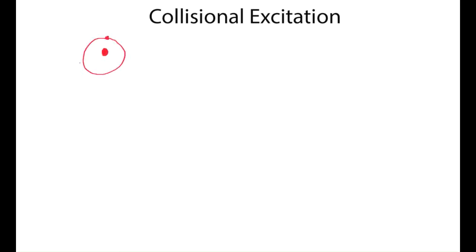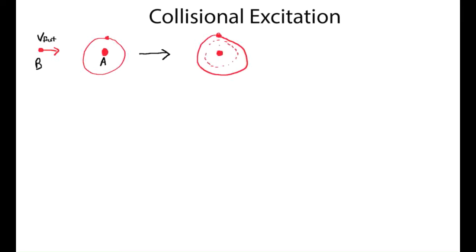The basic picture is that we have some atom with an electron going around it — call it particle A — and some other particle B coming in with some fast velocity. This collision causes a transition putting atom A into an excited state, with particle B moving off at some different, generally slower, velocity B'. Atom A is now in an excited state, denoted with an asterisk.